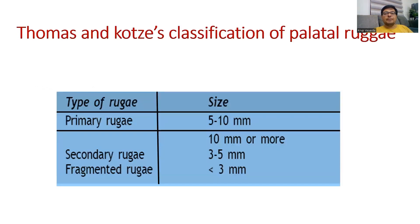यहाँ पर palatal rugae का Thomas and Corsets classification दिया हुआ है. He has mentioned two types of rugae: primary rugae, which are 5–10 mm; secondary rugae, which are 10 mm or more; and fragmented rugae, which are 3–5 mm or less than 3 mm. This is the classification of Thomas and Corset.